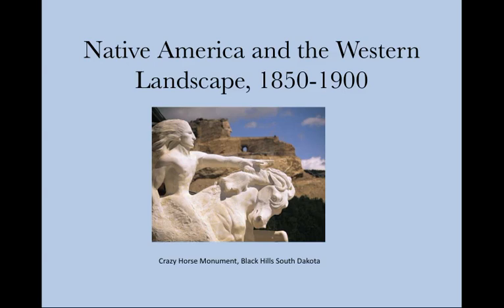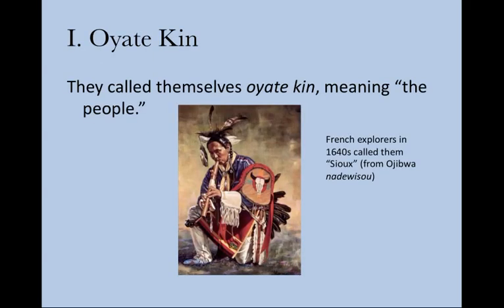Welcome, everyone, to this week's video lecture on Native America and the Western Landscape, 1850-1900. We will be talking about a people, a Native American people, who called themselves Oyate kin, which in English translates, as many Native American names do, as 'the people.'